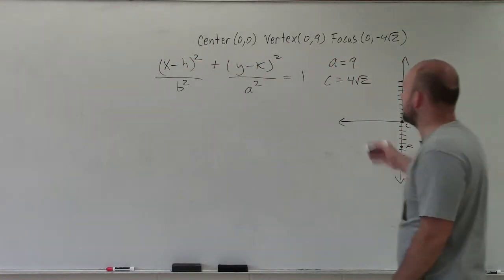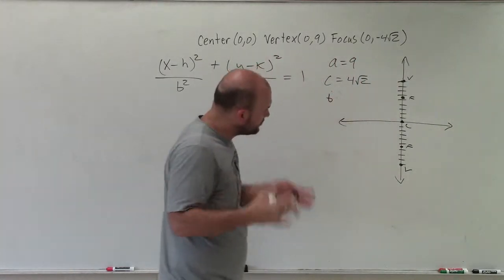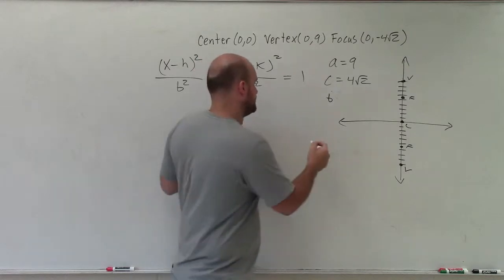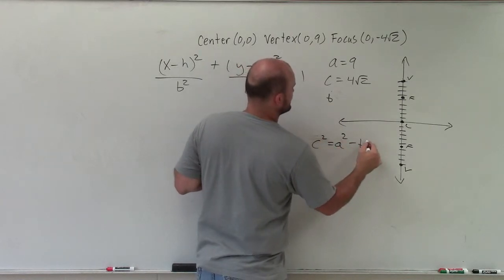And what we need to figure out is what b equals. So the relationship of a, b, and c for an ellipse is c² equals a² minus b².